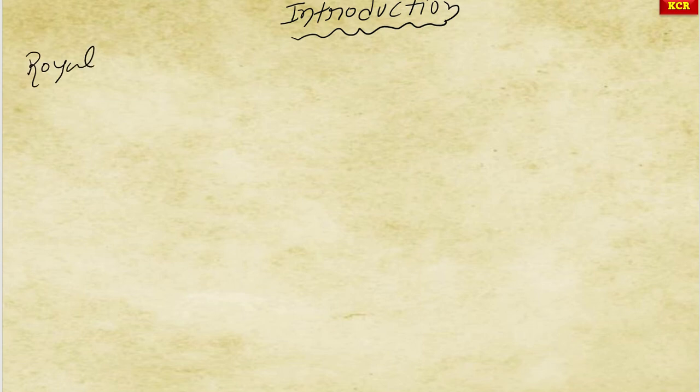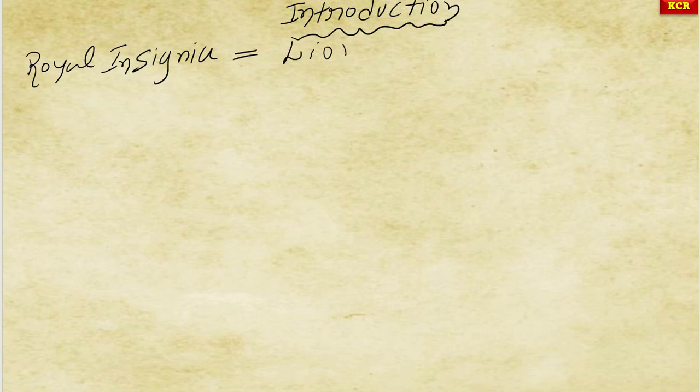Other than this, in the introduction part we should have a clear idea about their Royal Insignia. The Royal Insignia of the Vishnu Kundin dynasty was the Lion. Please remember this — it is very, very important.